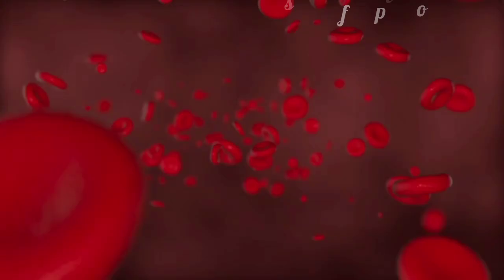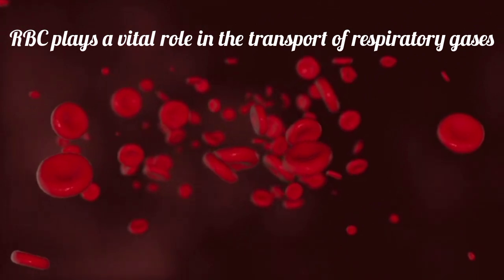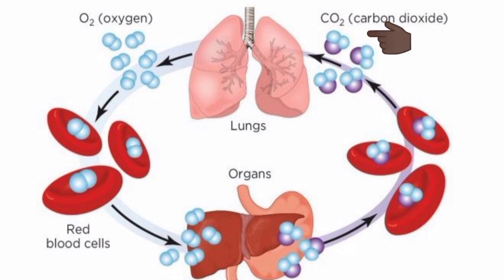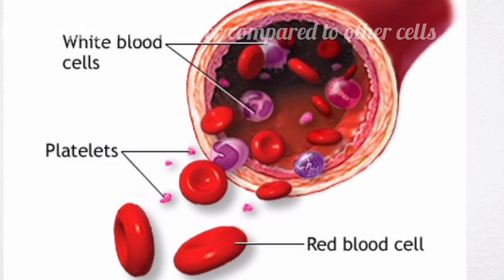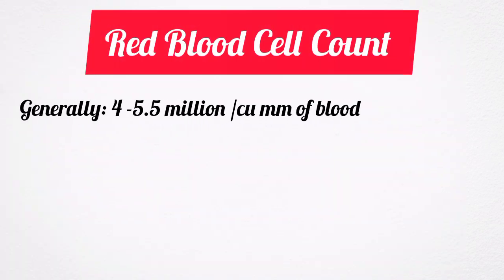Red blood cells play a significant role in the transport of respiratory gases. They transport oxygen from the lungs to the various tissues and organs of the body, and transport carbon dioxide from the tissues to the lungs. Red blood cells are larger in number compared to other cells, namely white blood cells and platelets. Red blood cell count ranges between 4 and 5.5 million per cubic millimeter of blood.